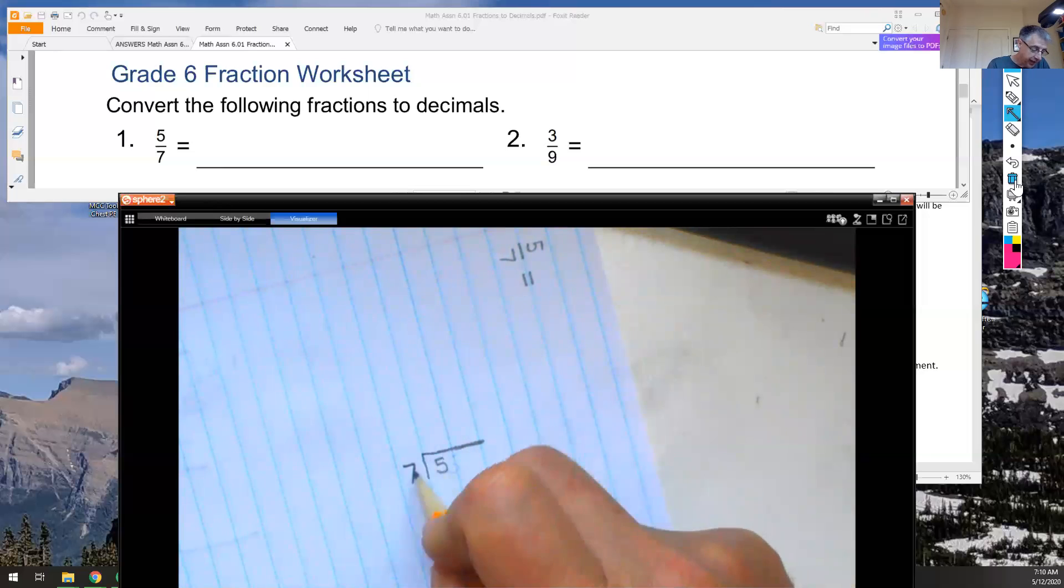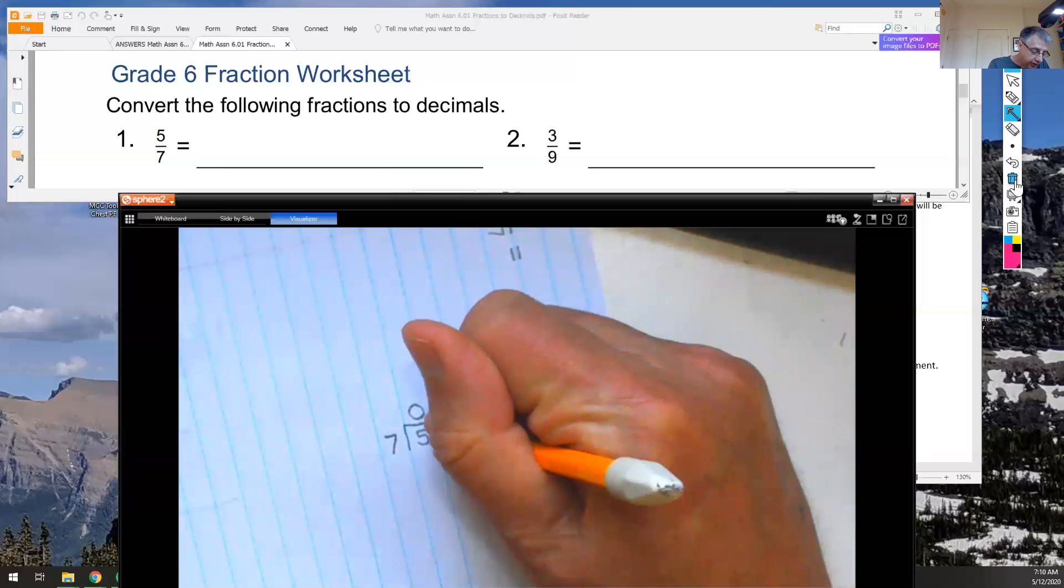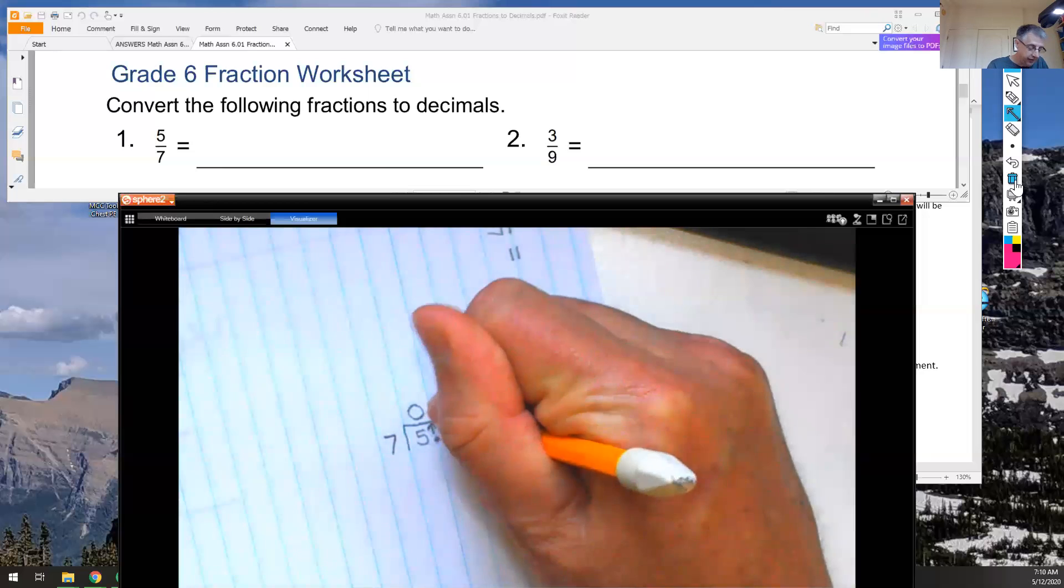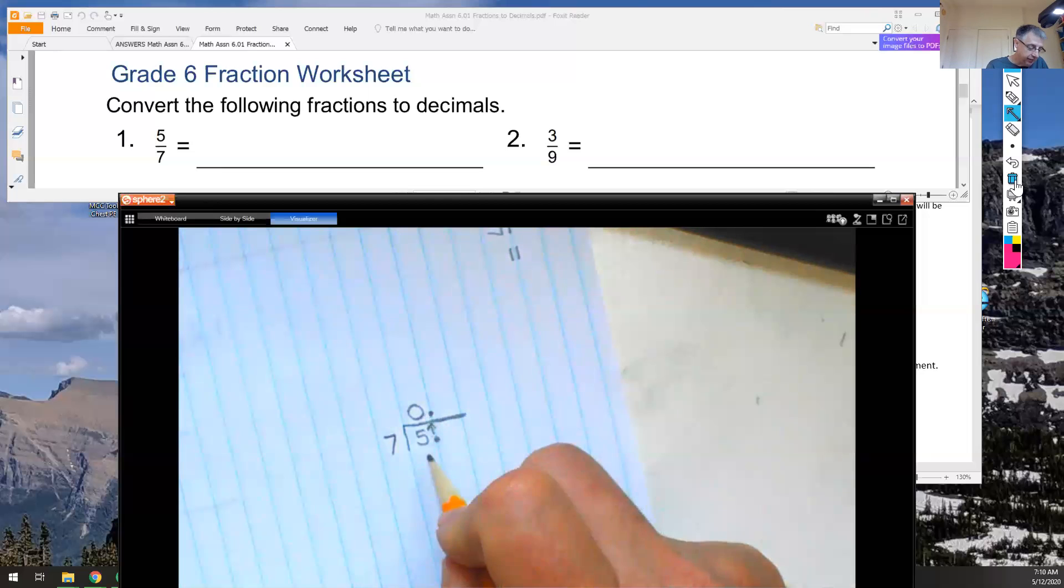So right now, I can't multiply anything by 7 to get 5, so I'm going to put 0 on top, add a decimal dot after the 5, bring the decimal dot up, put the decimal dot right to the right of 0, and then I'm going to continue. 7 times 0 is 0. 5 minus 0 is 5. Now that I have my decimal dot, I can annex a 0. So I'm going to drop the 0 down, and that 5 becomes 50.